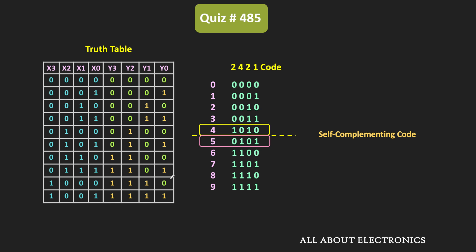Closely observing the Y3, Y2, Y1, and Y0 outputs of this PROM, at first glance it appears they represent the 2421 code. The first output is all 0s, the second is 0001, and almost all outputs are similar to the 2421 code. But the fourth output is not matching — in the 2421 code, the numbers from 0 to 4 must be mirror images of the numbers 5 to 9, and the number 4 and number 5 are not mirror images of each other here.